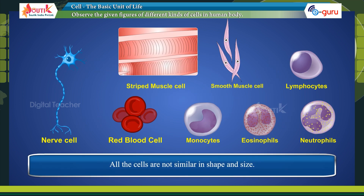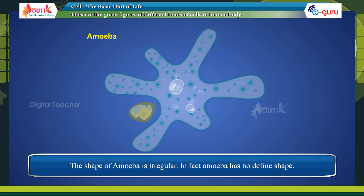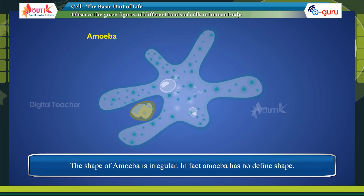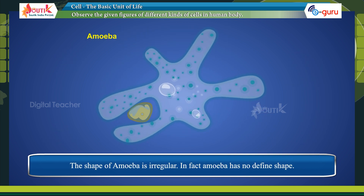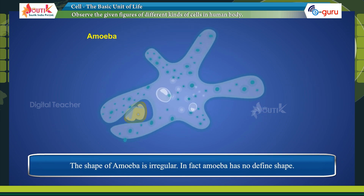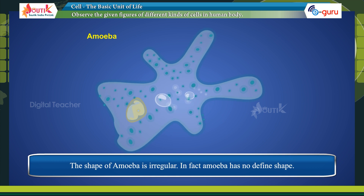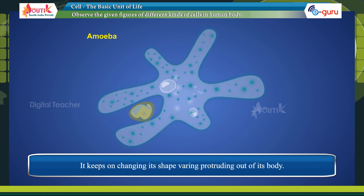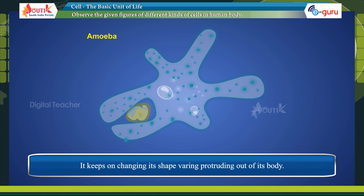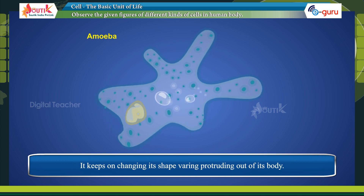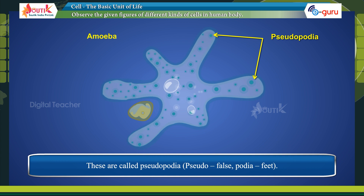All cells are not similar in shape and size. The shape of amoeba is irregular; in fact, amoeba has no defined shape. It keeps on changing its shape, with extensions protruding out of its body. These are called pseudopodia. The projections appear and disappear as amoeba moves or feeds.